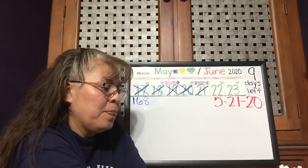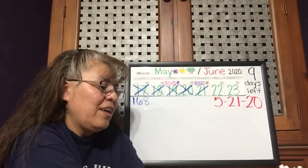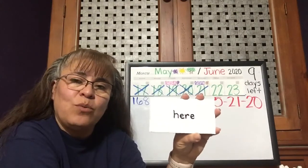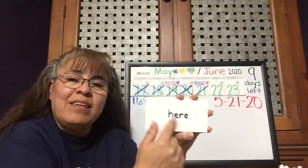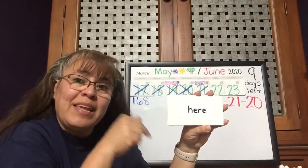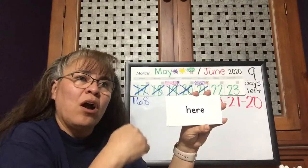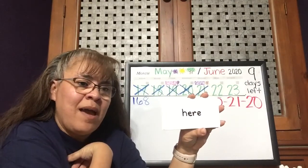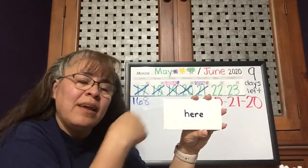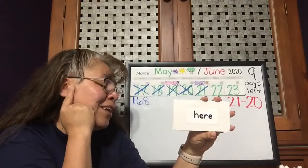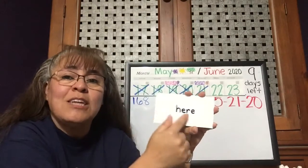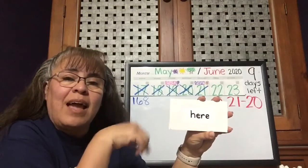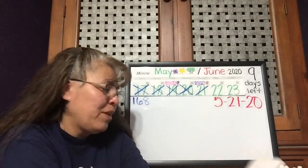So today for our check-in, it might be a little tricky, but we're going to make a sentence with the word 'here.' This 'here' means like right here where you are — I am here at my home, or my grandsons are here with me. This is not the 'here' like our hearing for our senses, because that would be spelled differently. So 'here,' like 'here we are.'